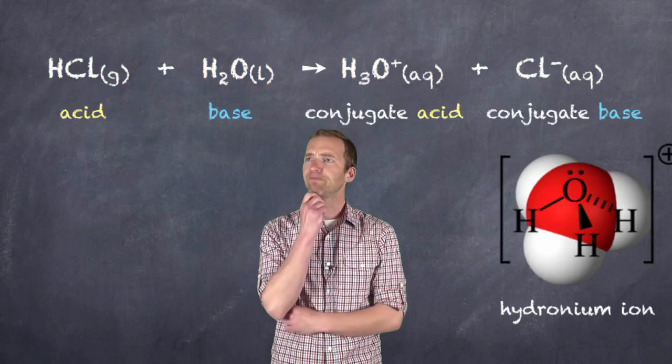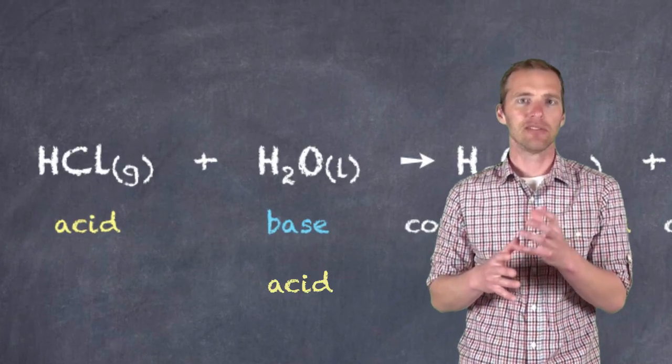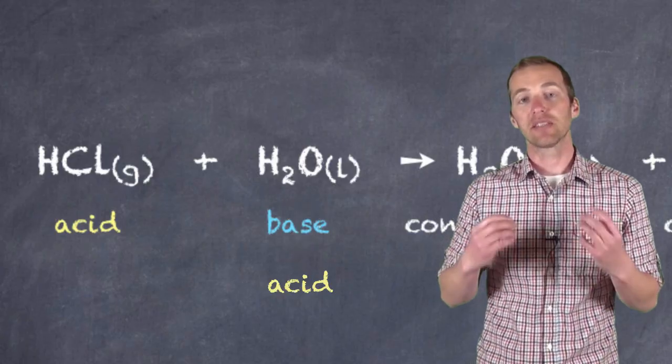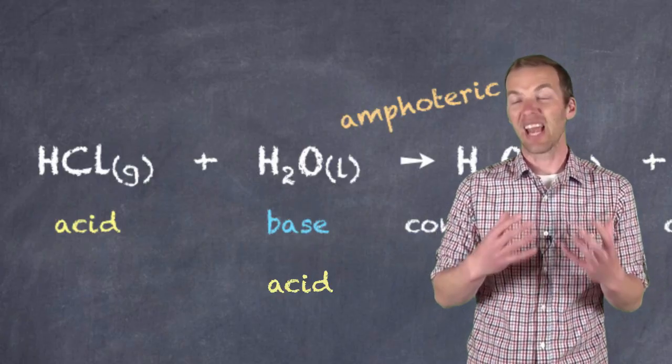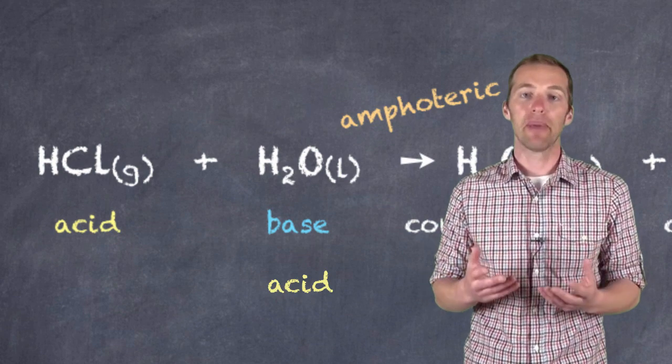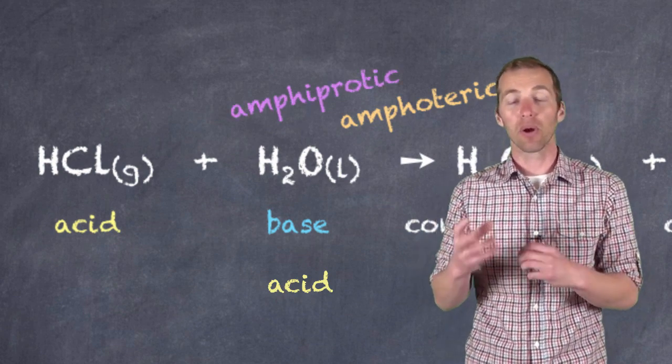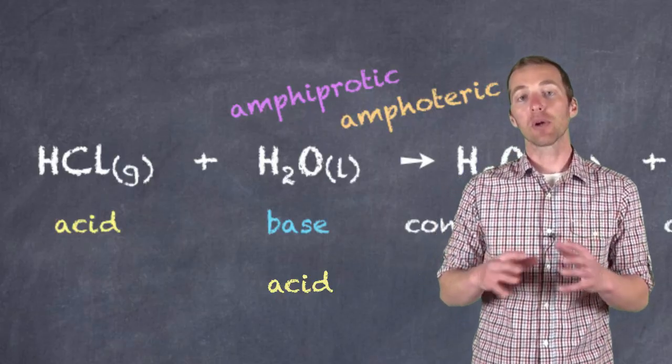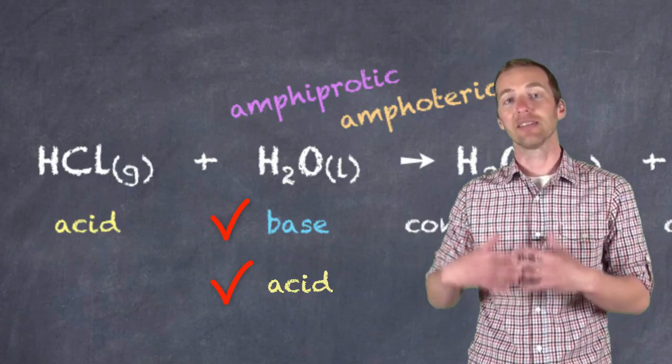Now I know you might be saying, hmm, water was an acid in that last reaction, and now it's a base. How is that possible? Well, water is one of these substances that we say is amphoteric, that is, it can exist or behave as either an acid or a base, and you can even refer to it as amphiprotic, that is, it can donate both a proton and accept a proton, depending on what it's reacting with. So you may come across substances sometimes, like water, that can exist both as an acid and a base.